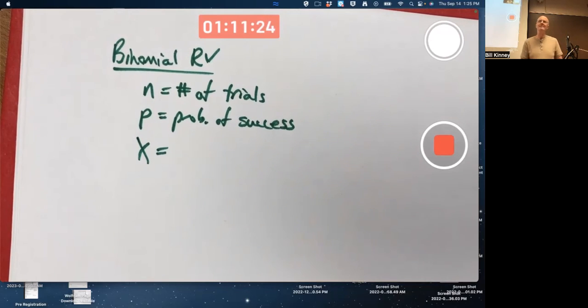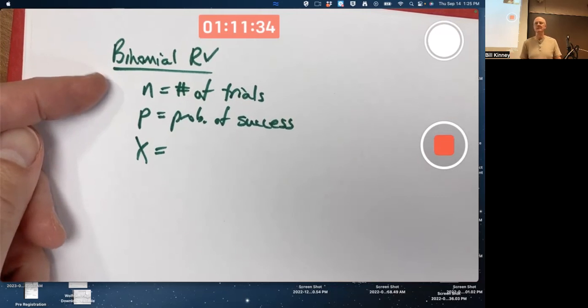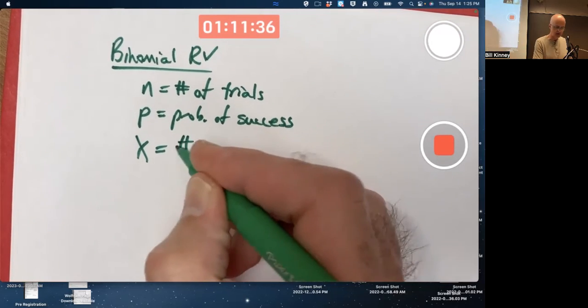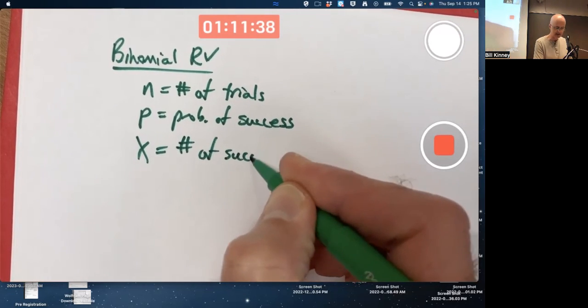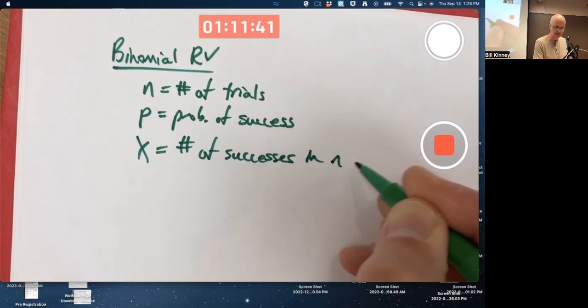X is now not doing what we do with geometric - we're not counting the number of trials until the first success. What we're doing is we're counting the number of successes in n trials.